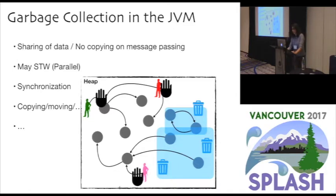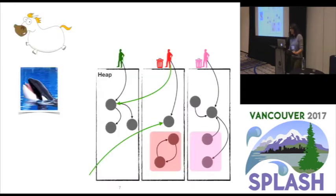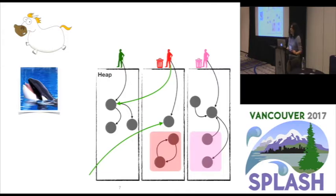What we have been trying to answer with Orca is: can we have both? Can we have actors sharing state and sending messages without copying, while still having garbage collection without synchronization and stop-the-world steps as in Erlang? In Pony, each actor also has its own local heap, like in Erlang, where it allocates and collects its own objects. But like in Akka or other JVM-based actor implementations, it allows for sharing of data, meaning that if an actor sends a message, it does not need to copy any of the contents to the receiver's heap.